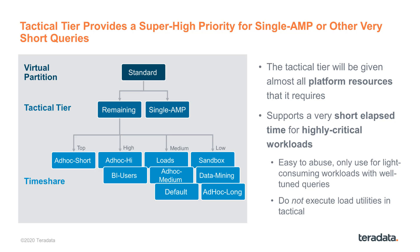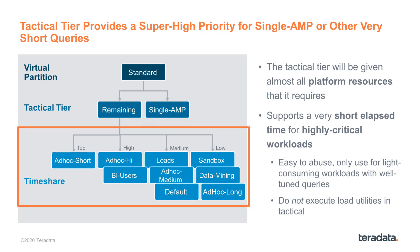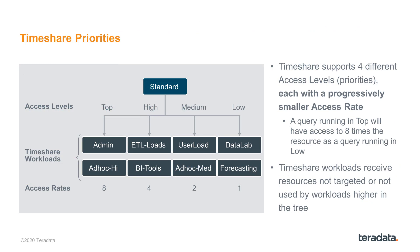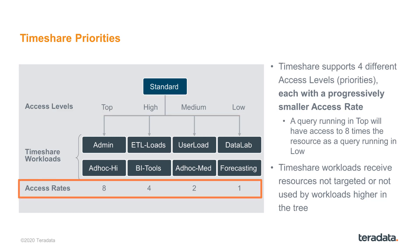The bulk of the workloads are intended to be running in what we call timeshare, which is at the base of this priority hierarchy. The timeshare tier has four priority divisions: a top, high, medium, and low. We call these access levels, and each of them have their own access rates. The purpose of the access rates is to determine the percent or level of resources that each query is going to receive compared to queries running in some of the different access levels.